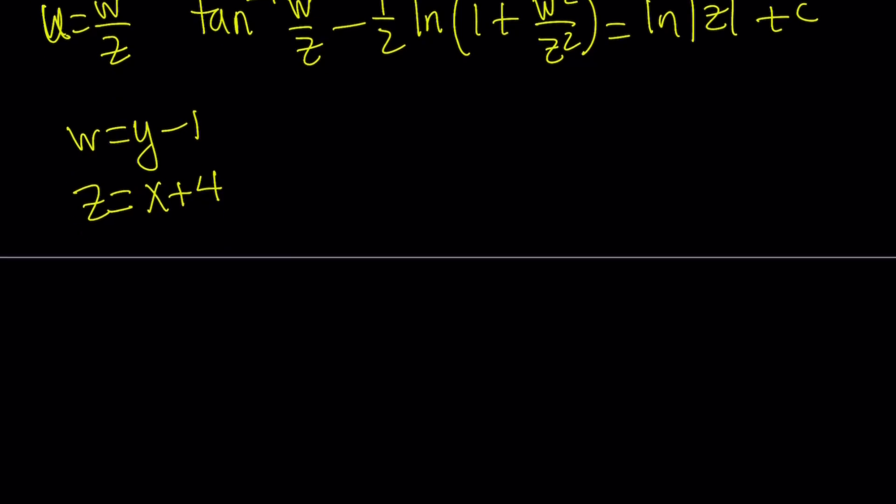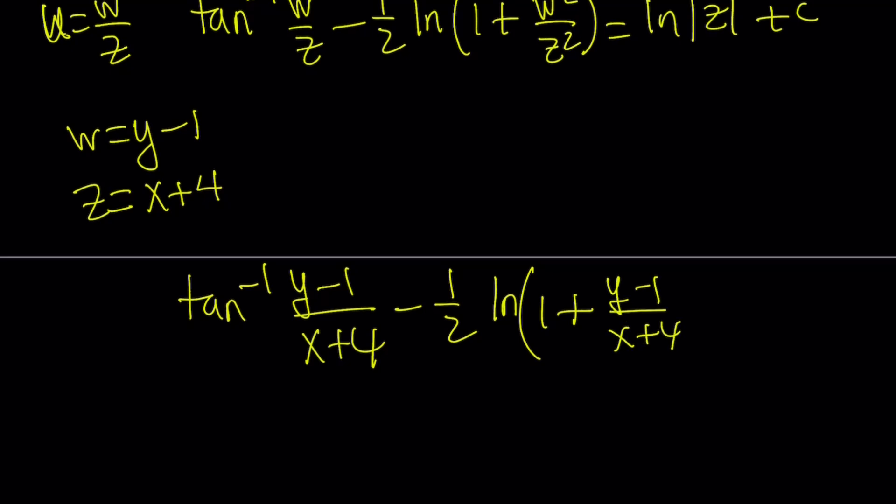tan inverse w, which is y minus 1, over z, which is x plus 4, minus 1 half of ln, 1 plus, now, I can write this as a quotient first, w over z, and then square it that way. w over z squared.